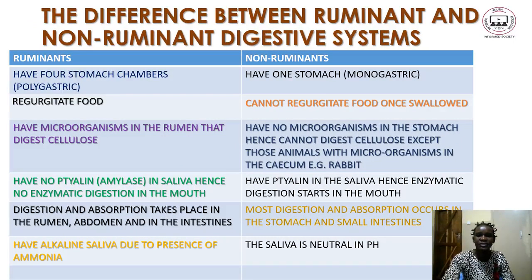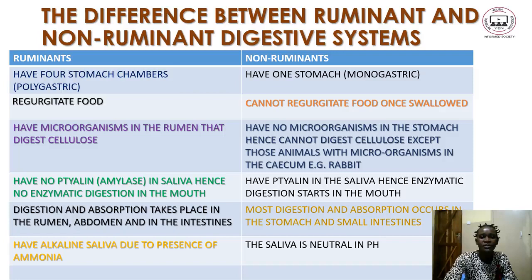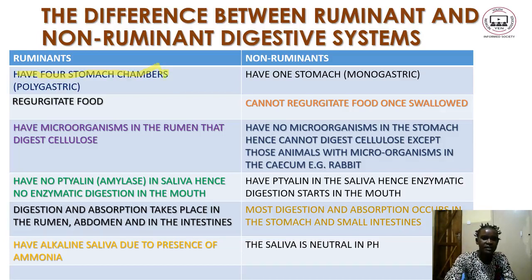Let us now look at the differences between ruminant and non-ruminant digestive systems. The differences have been put into a table with two columns — one showing characteristics of ruminant animals and the other for non-ruminants. The first difference is that ruminant animals have four stomachs or chambers, that is why they are known as polygastric, while non-ruminants have only one stomach, hence the name monogastric.